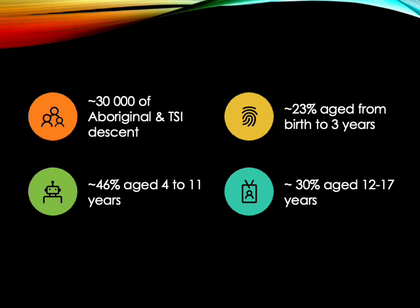Approximately 23% are aged from birth to three years — that's where we're looking at children who may need time in childcare. We then have around 46% in our primary school age, four to eleven years, which is where you will encounter them in a school-based setting. We have around 30% aged twelve to seventeen years, sitting in our secondary settings. We do have a steady growth of population in Western Australia, so it's important for us to know that we will continue to get children coming through in our birth to three years, and there's growing need for people with your qualifications to support parents who need to put their children into care so they can work and have respite.